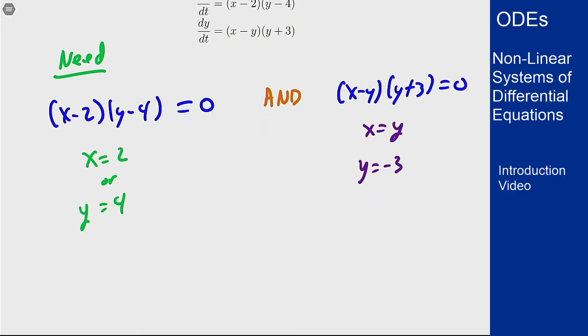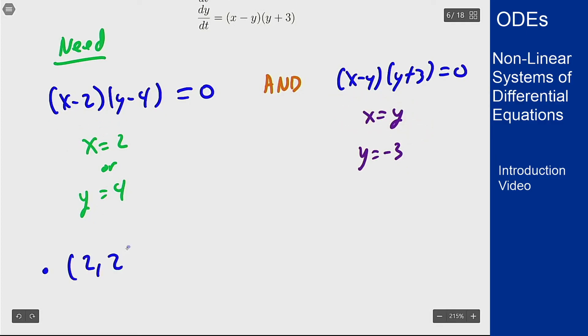And this means I have to satisfy at least one equation from each side at the same time. So I could take this first and this first condition to get the point (2, 2) works because x equals 2 and x equals y. I could pair this first with the second to get that (2, -3) works. I could pair the second with the first to get that (4, 4) works and I could pair the second with the second to now have a problem because I can't have both y equals 4 and y equals minus 3. So that does not work as an equilibrium solution because I can't use these two to give me a point together.